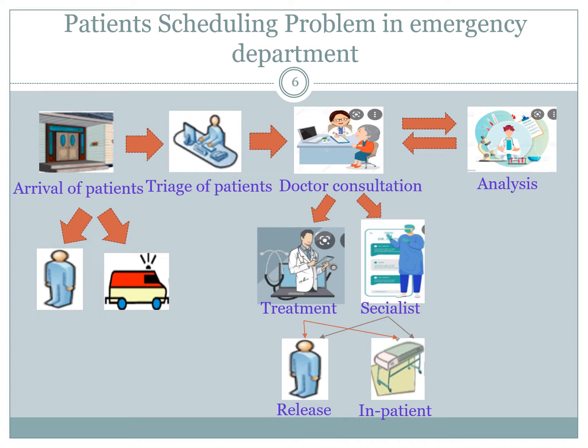In fact, for non-emergent cases, the administrative process will be treated at the beginning of the care process, reverse to the emergent cases in which the administrative process will be treated after finishing the care process. After the triage process, each patient will be passed for a normal consultation by a doctor who can request supplementary analysis. Based on the analysis results, he decides either to care for this patient himself or to ask for a specialist. In both situations, the patient can go home or be hospitalized.